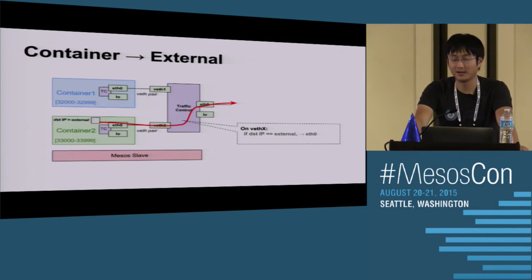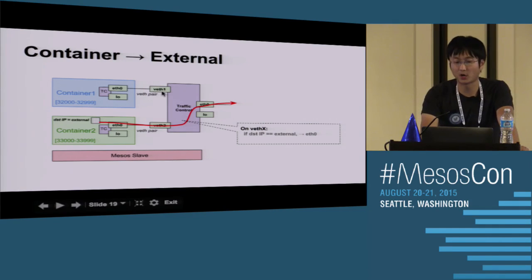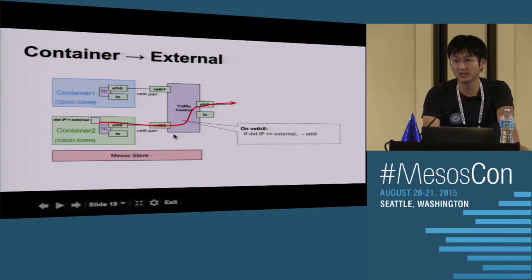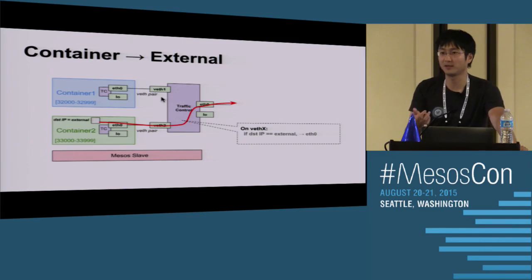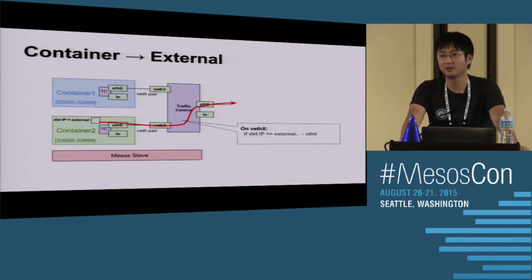Question: how do you maintain state for those port ranges after a slave crash? Answer: we parse the TC rules on the VETH interfaces, because there's a one-to-one mapping between a VETH and a container. We list all the VETHs on the host network, parse the TC rules, and from those rules we can recover the port ranges. That's how we recover port range state after a slave crash or network churn.